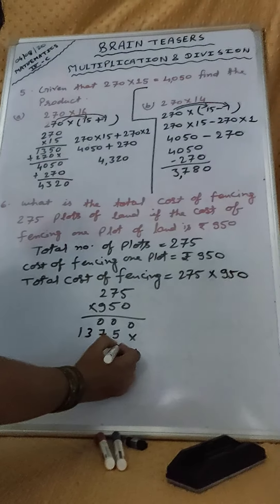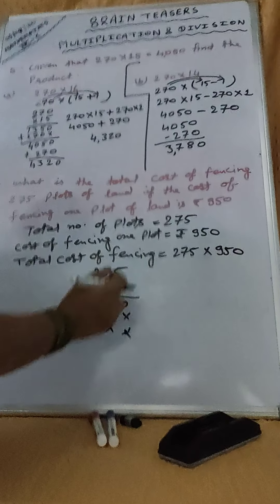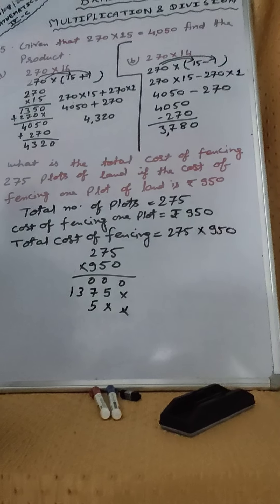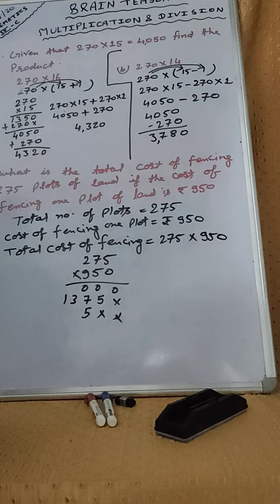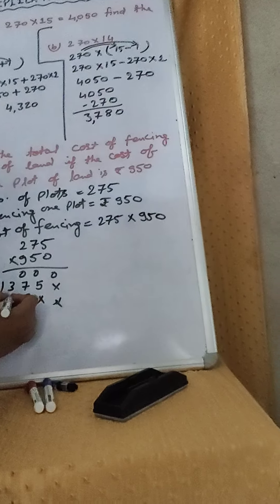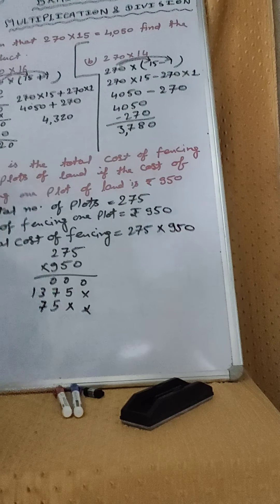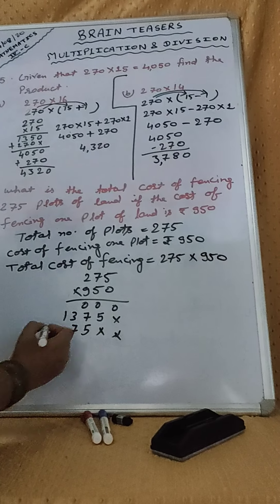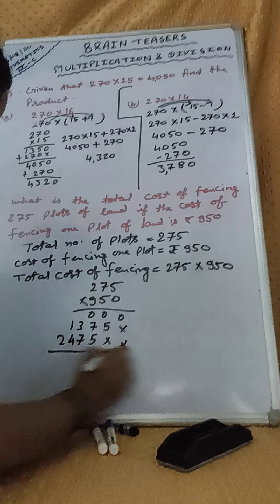Again, we should put here cross or 0 symbol. 9, 5, that 45. We should write here 5, carry 4. 9, 7, that 63, plus 4, 67, carry 6. 9 to 0, 18, plus 6, 24.